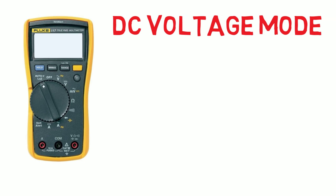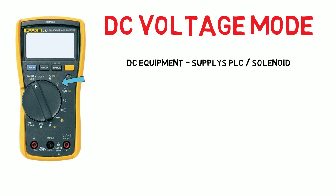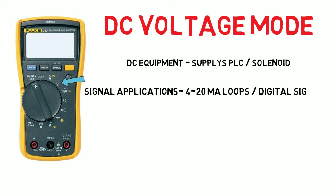This mode is for measuring DC or direct current voltage. Notice there is no hertz function available in this mode, because DC has no frequency as the current continually flows in a single direction. Some equipment may be powered by DC voltages such as PLC equipment or solenoid supplies, especially if battery powered, but they are also found in signal applications such as the voltage in a 4 to 20 milliamp transmitter loop for analog signals and in digital signals where equipment is looking for voltage to be present or not to determine an input state. Common DC voltages we may be testing for are 5, 12, 24 and 110 volts DC.